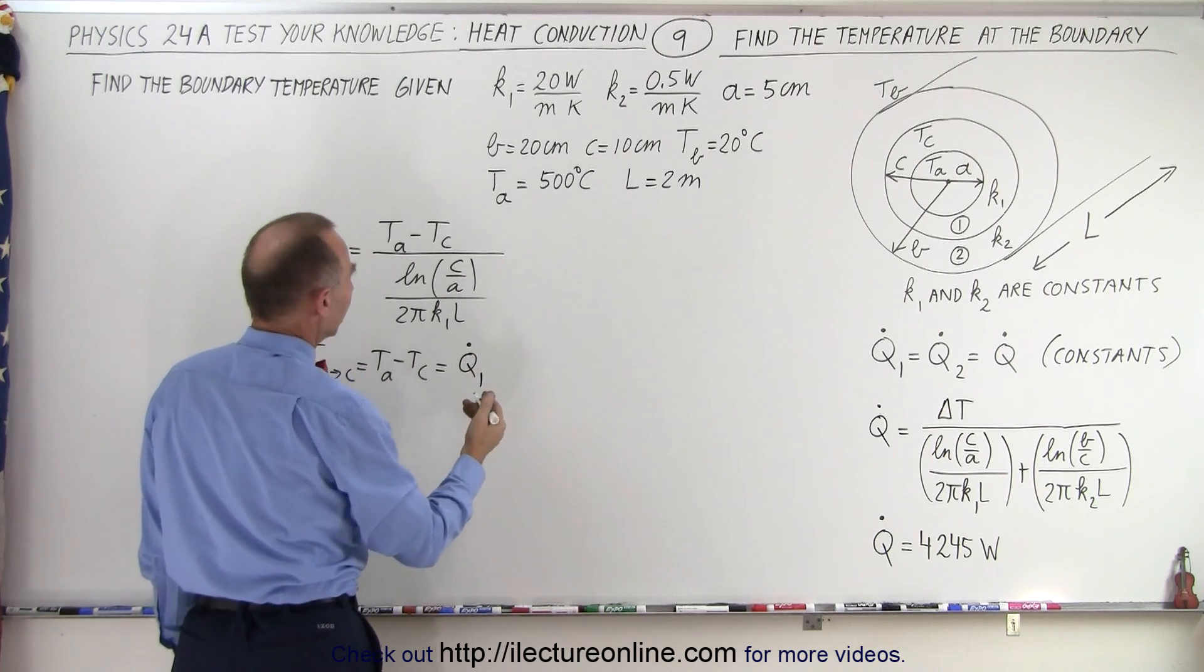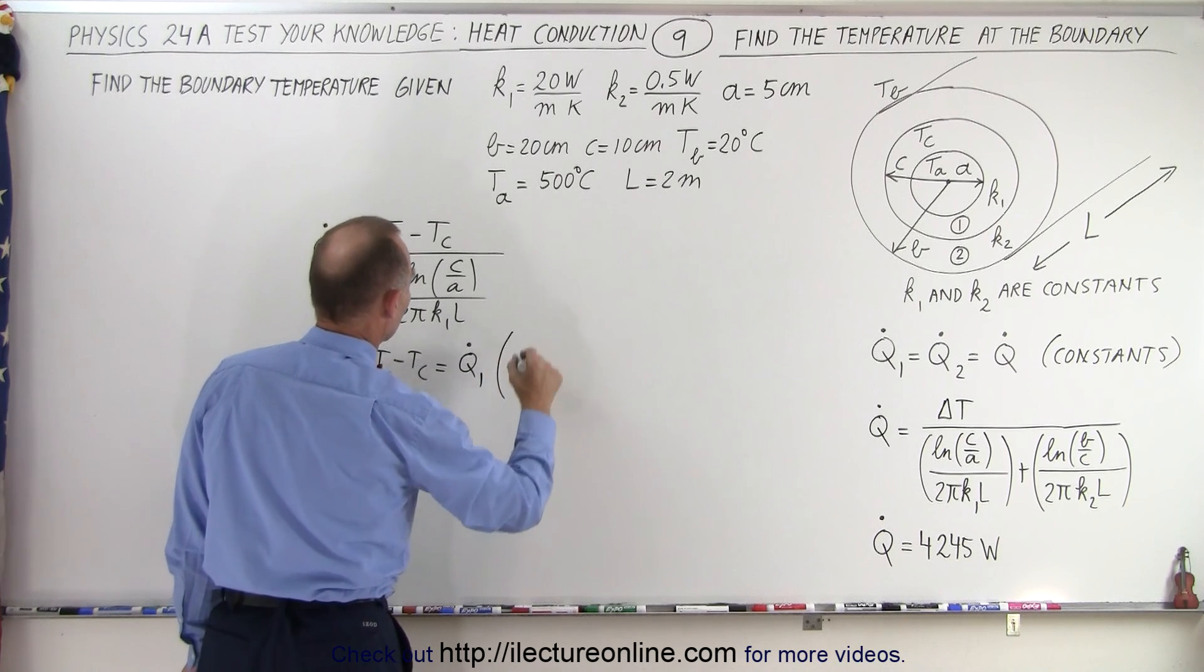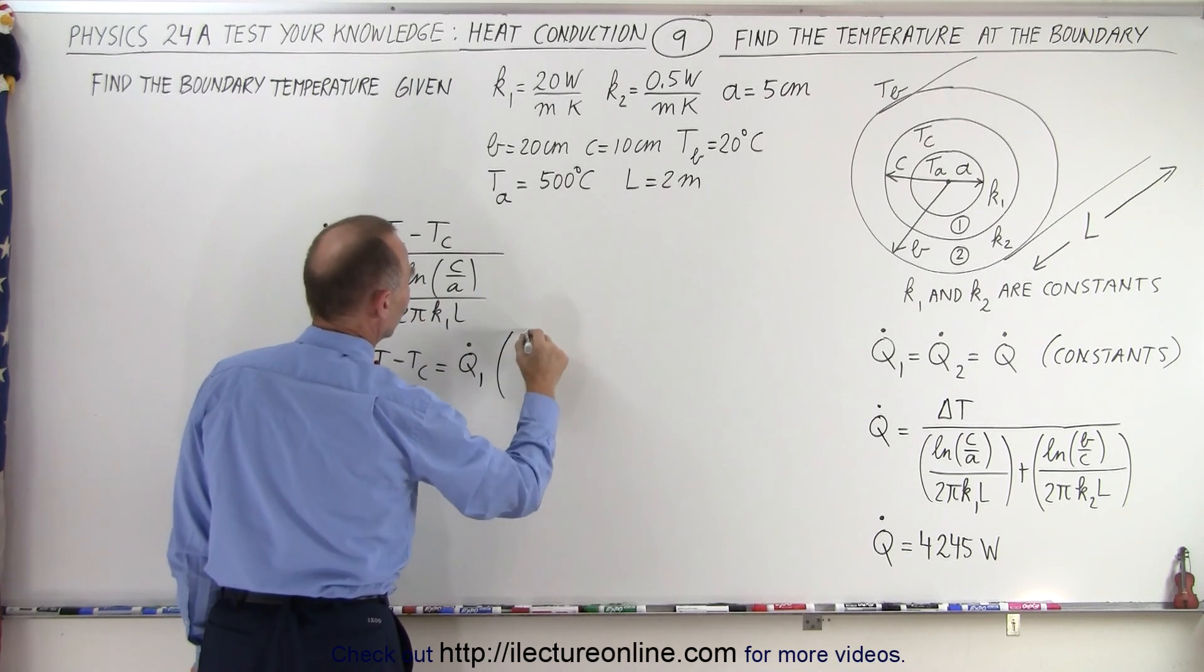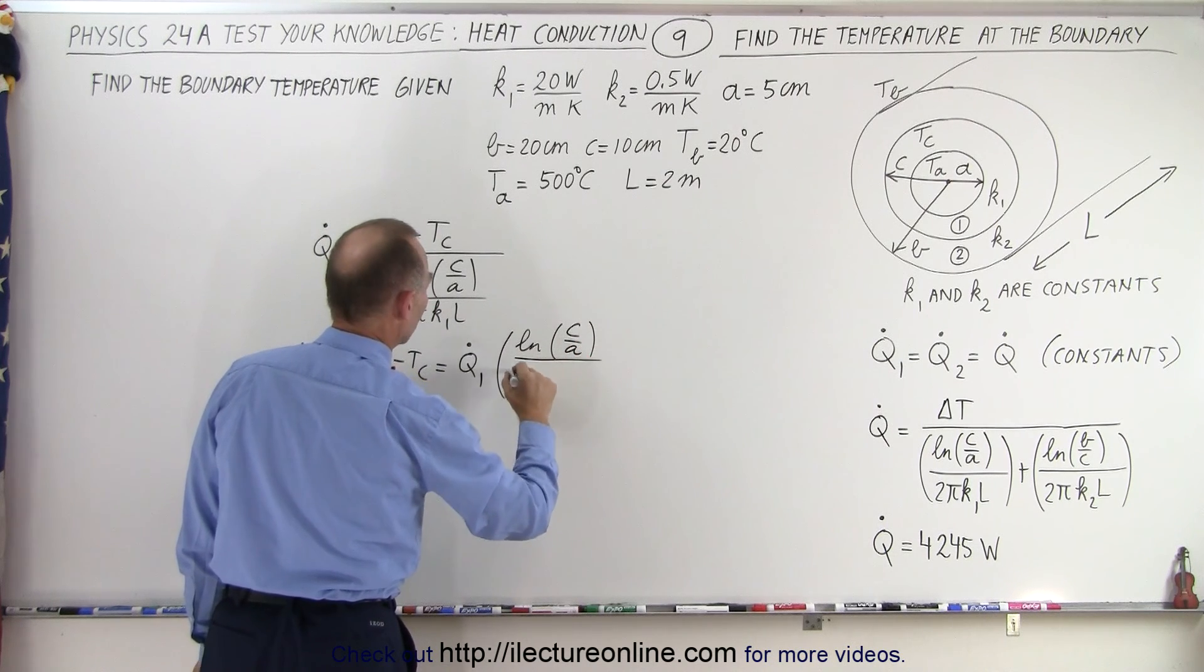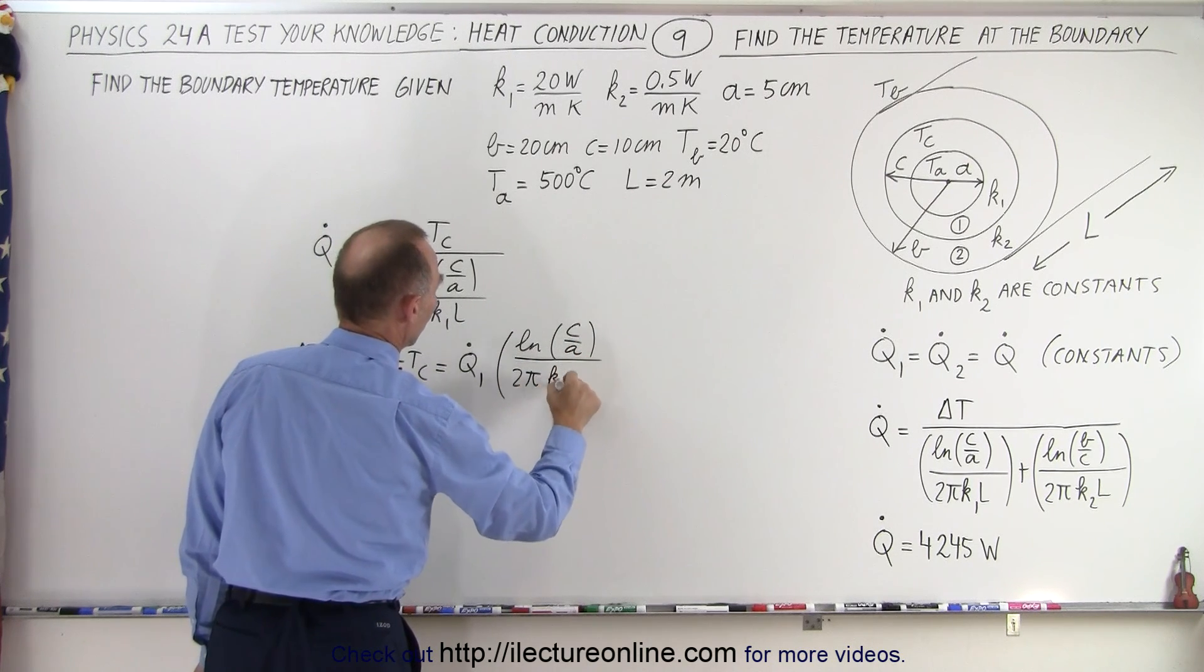Which is the same as Q dot, times the heat resistance, which is the natural log of C over A, divided by 2πK₁L.